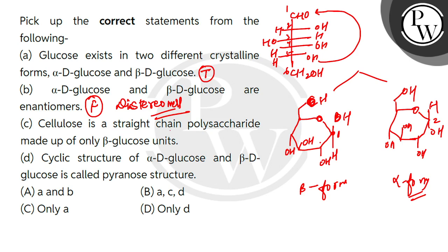In statement (c), cellulose is a straight chain polysaccharide made up of only beta-glucose units. Cellulose is a polysaccharide. Polysaccharides on hydrolysis release a large number of monosaccharide units. Cellulose is a polysaccharide of beta-D-glucose units. They are linked at C1 and C4.